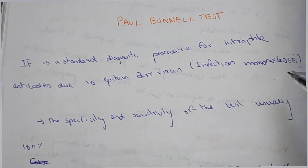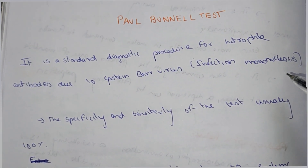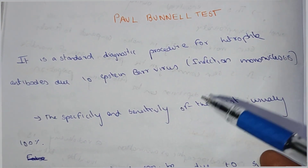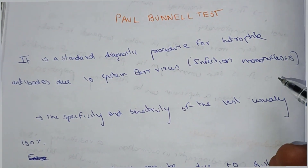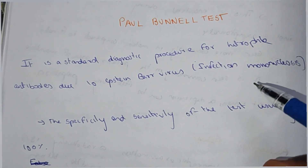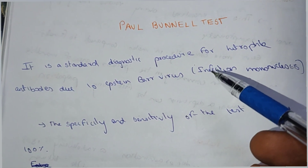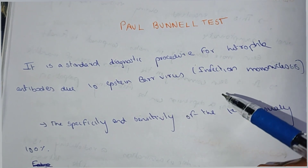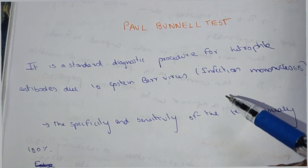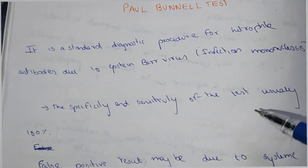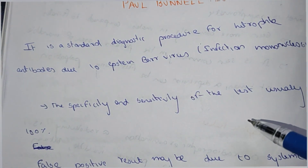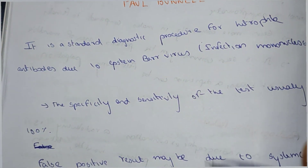The Epstein-Barr virus test is more specific for infectious mononucleosis — this disease is found by this test. The Epstein-Barr virus produces heterophile antibodies, and to find those, the Paul-Bunnell test is most important. The specificity and sensitivity of this test is 100 percent.